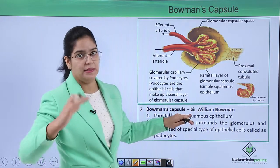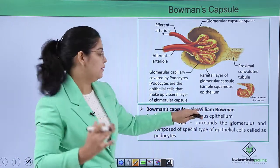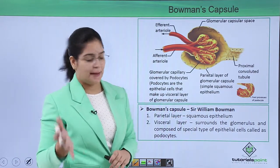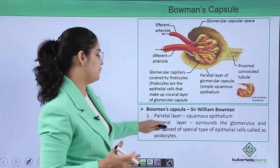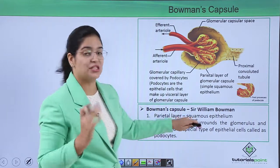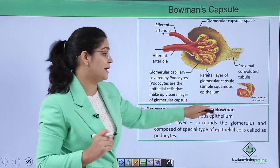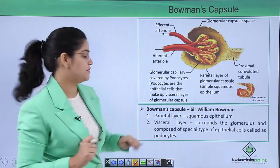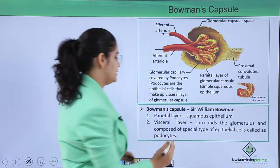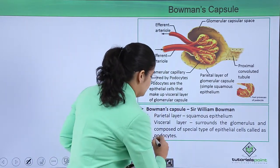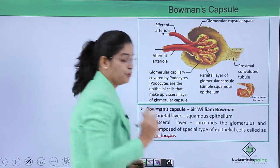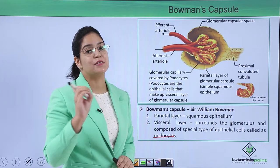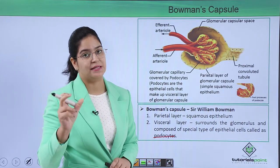The visceral layer surrounds the glomerulus and contains a special type of cell known as the podocyte. Podocyte means something that looks like pedicels, or foot-like structures.